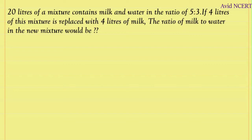Hello viewers, welcome to my channel, this is Geeta. 20 liters of a mixture contains milk and water in the ratio 5 is to 3. If 4 liters of this mixture is replaced with 4 liters of milk, the ratio of milk to water in the new mixture would be? First, mark the information from the first sentence: the total mixture is 20 liters, containing milk to water in the ratio 5 is to 3.